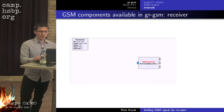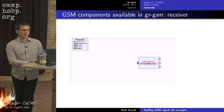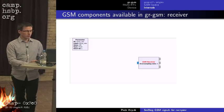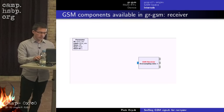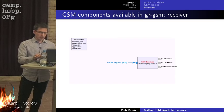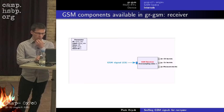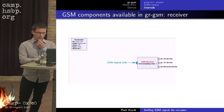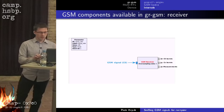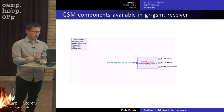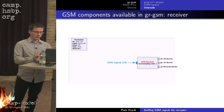In GNU Radio Companion — the GNU Radio graphical user interface — the receiver has one input for the broadcast channel and always three outputs: one for broadcast channel bursts, one for other channel bursts, and one for carrier frequency offset measurements.